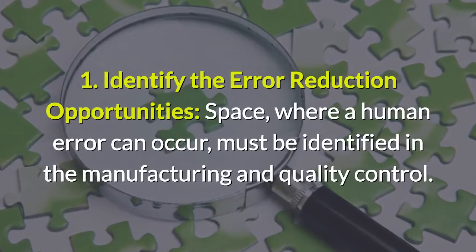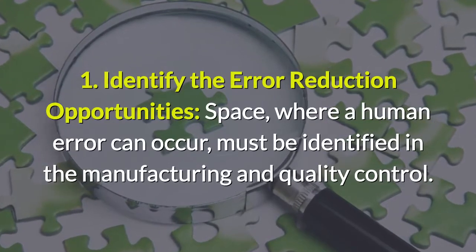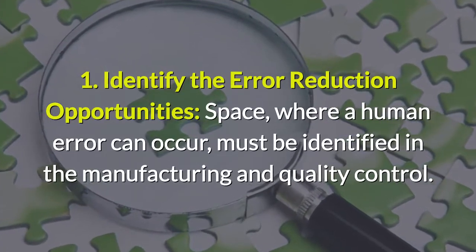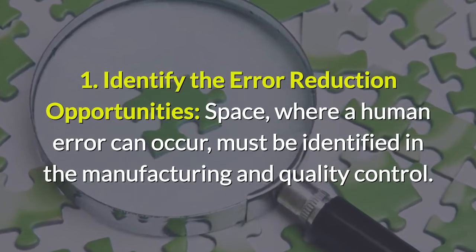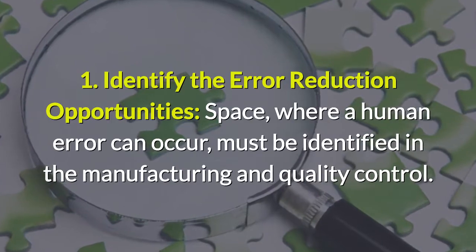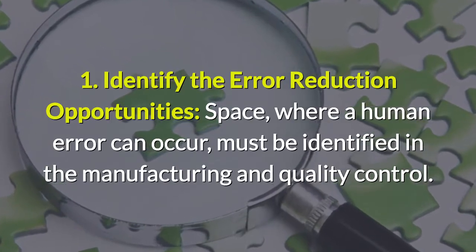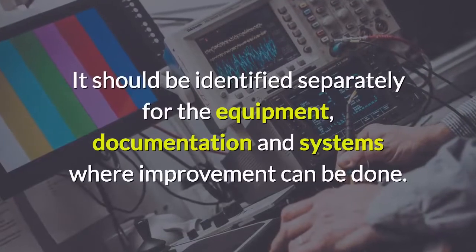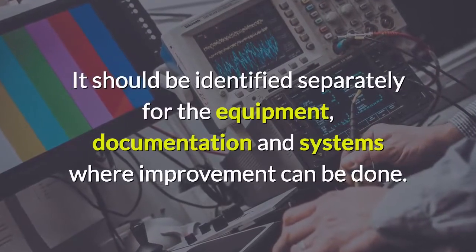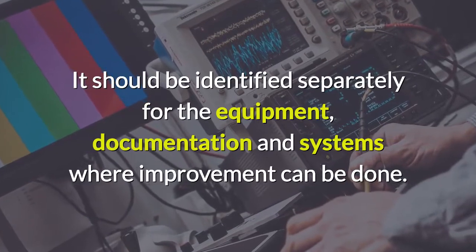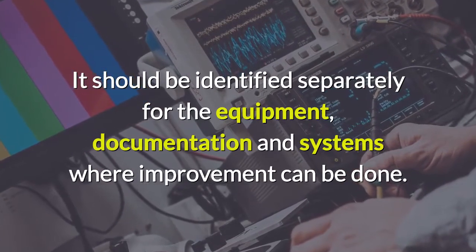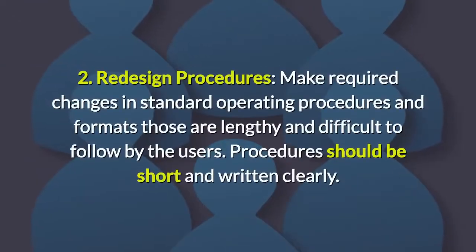1. Identify the error reduction opportunities. Areas where a human error can occur must be identified in the manufacturing and quality control. It should be identified separately for the equipment, documentation, and systems where improvement can be done.